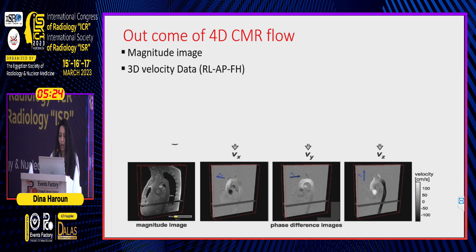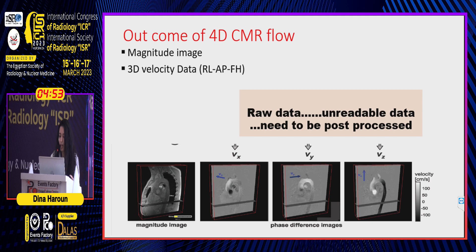As with the 2D flow, the 4D flow has magnitude images, but instead of having one direction, it has three directions: the x, y, and z directions. Across time, those are the four dimensions, covering right-left, anterior-posterior, and feet-head. However, these are raw, unreadable data, so we need post-processing to extract quantitative data from those images.